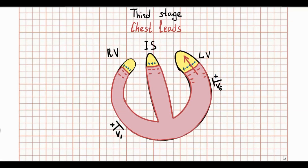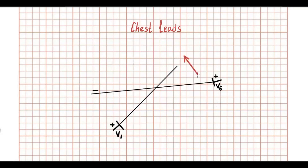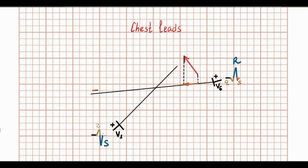The third stage is depolarization of the ventricular basal parts. The vector of depolarization in this case is directed away from the positive pole of V6. This is a small region of the ventricles; therefore, V6 displays a small negative S wave. The depolarization of the ventricular basal parts is far from V1, so this depolarization has no influence on the QRS complex in V1.